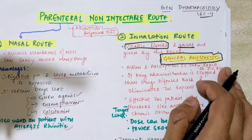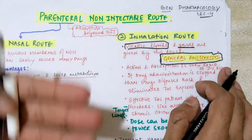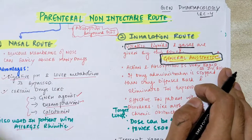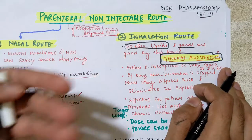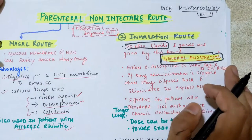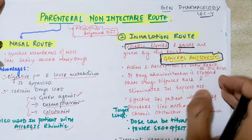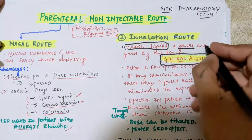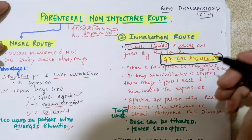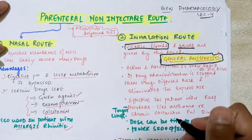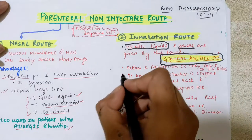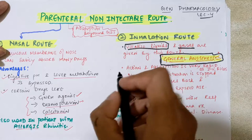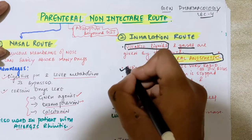The drugs specifically given by the inhalation route are general anesthetic drugs. When we have to suppress the respiratory system and suppress pain — for general anesthesia — we use this route. Examples include nitrous oxide. All these general anesthetic drugs come under the inhalation route, and you will study them in detail later.